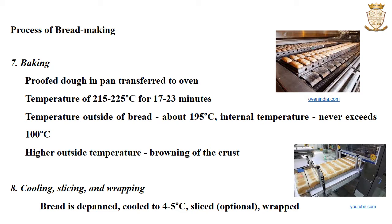The next stage is cooling, slicing and wrapping of the bread. The bread is de-panned, removed from the pan, and cooled to 4 to 5 degrees Celsius. It is then sliced — slicing is optional — and then wrapped.